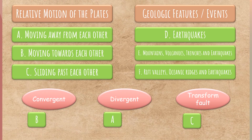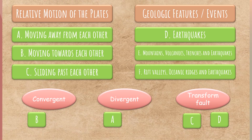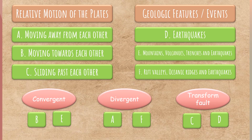For geologic features: Letter D — earthquakes. Transform fault boundary. For letter E — mountains, volcanoes, trenches, and earthquakes. Very good! Convergent. And finally, letter F — rift valleys, oceanic ridges, and earthquakes. Very good! Divergent boundary.